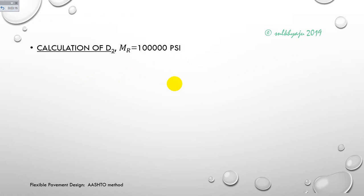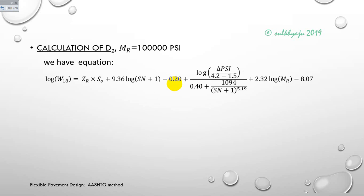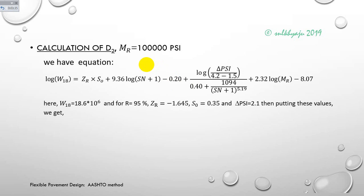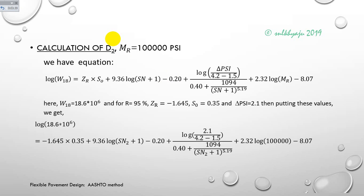For the calculation of d2 — the base course thickness — we use the resilient modulus of the surface course, which is 1,000,000 psi. Using the AASHTO equation and inputting the design parameters, we solve the equation and determine structural number SN2 = 2.0359.